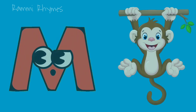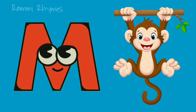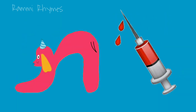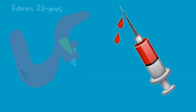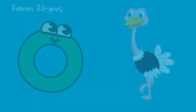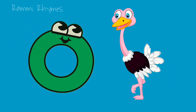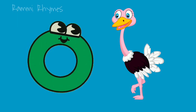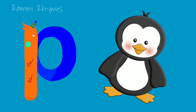M is for monkey. N is for needle. O is for ostrich. P is for penguin.